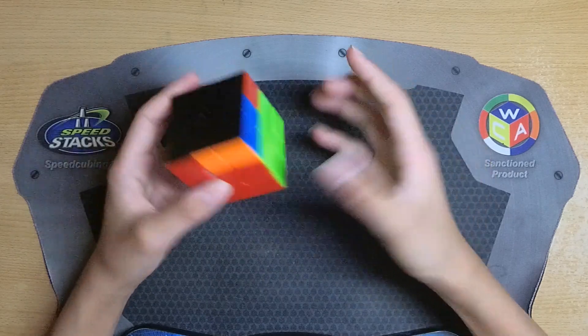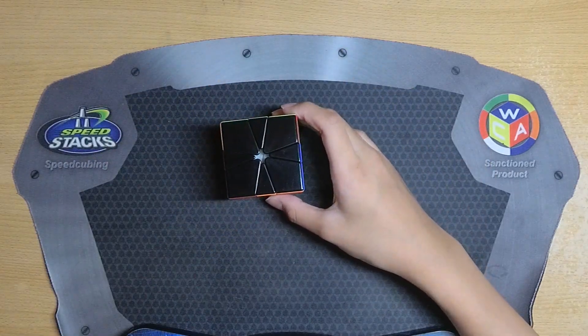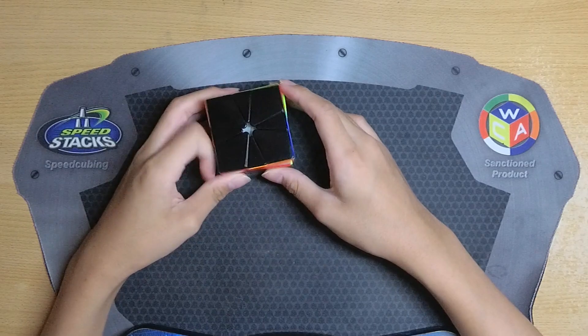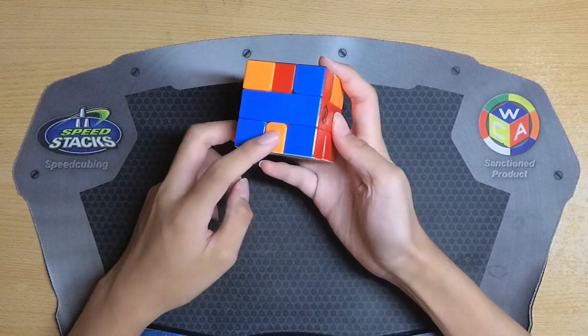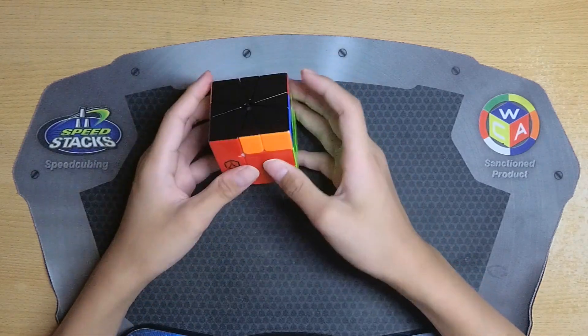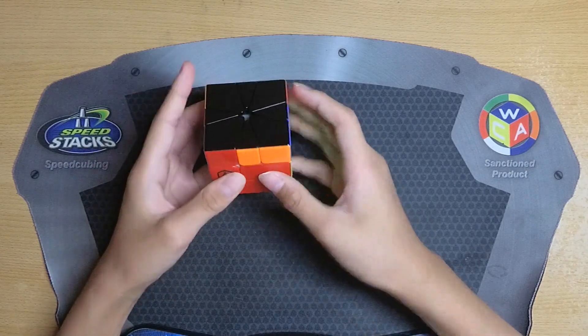I think this is P perm, I don't really know the name actually, but I know I can force either adjacent or opposite depending on how I align it.